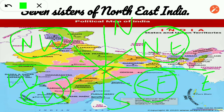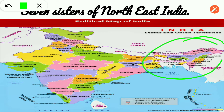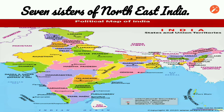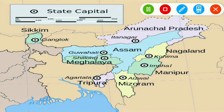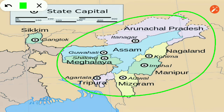Today we will know about these states which are in northeast India. These are very often ignored and there is usually confusion. These are the seven states known as the seven sisters of India. There is also a brother — actually a second brother — and tricks to learn about their location and shape, but we will focus on the seven sisters today.